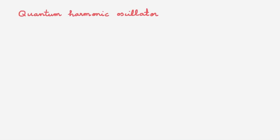The displacement operator is defined in the context of the quantum harmonic oscillator, so let's start with a quick refresher. The quantum harmonic oscillator is characterized by the Hamiltonian H, which has the standard kinetic energy term and whose potential energy depends quadratically on the position operator.